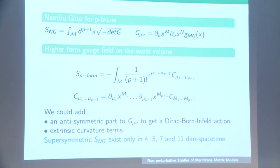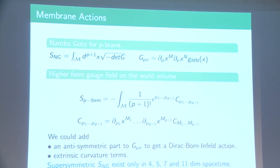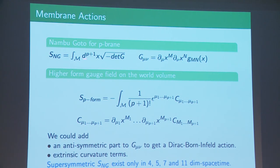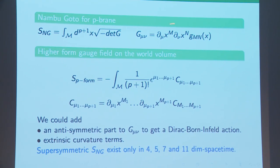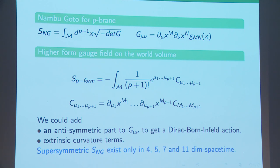The starting point, which I believe was Jens's starting point when he began with these membrane models, was to start with the Nambu-Goto action. The Nambu-Goto action is just the induced volume pulled back onto the membrane from the ambient embedding space, so we're pulling back the metric from some ambient embedding space with metric g_mn onto this p+1 dimensional surface called the p-brane, where one dimension is meant to be time.